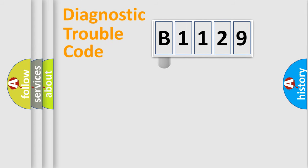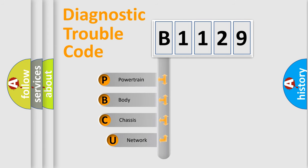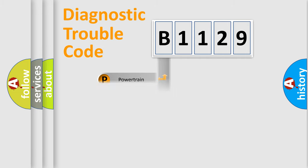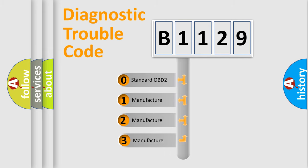Let's do this. First, let's look at the history of diagnostic fault code composition according to the OBD2 protocol, which is unified for all automakers since 2000. We divide the electric system of an automobile into four basic units: Powertrain, Body, Chassis, and Network. This distribution is defined in the first character of the code.